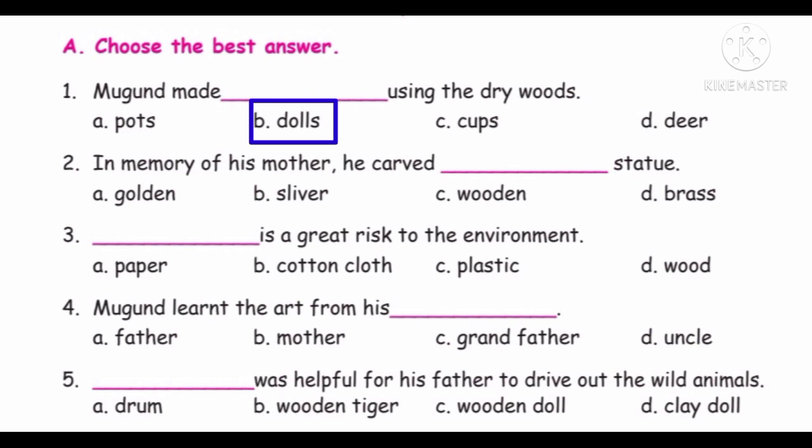Second question: In memory of his mother, he carved dash statue. Options: Golden, Silver, Wooden, Brass. In memory of his mother, Muhun carved a wooden statue. The answer is wooden. In memory of his mother, he carved a wooden statue.